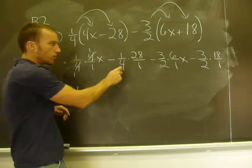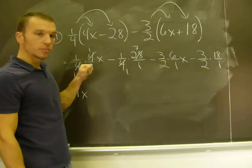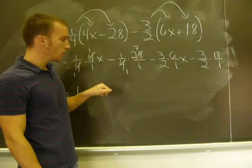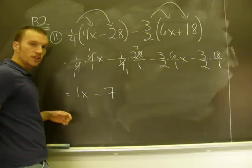Same thing over here. Four goes into four once, twenty-eight seven times. Multiply. One times seven is seven over one times one is one. It'd be seven over one, or just seven.